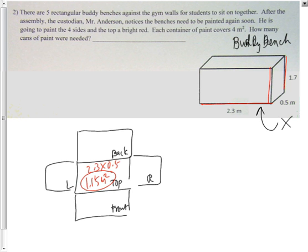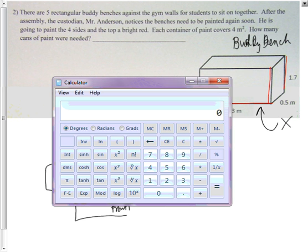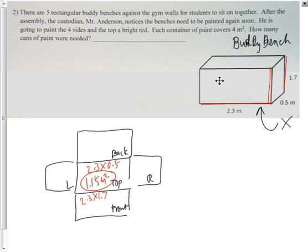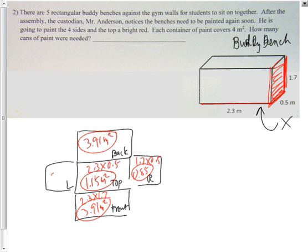I'll need a calculator: 2.3 times 1.7 is 3.91 square meters. Since the front is that, the back will also be the same. The right side is 1.7 by 0.5, so 1.7 times 0.5 is 0.85, and the left will be 0.85 as well.